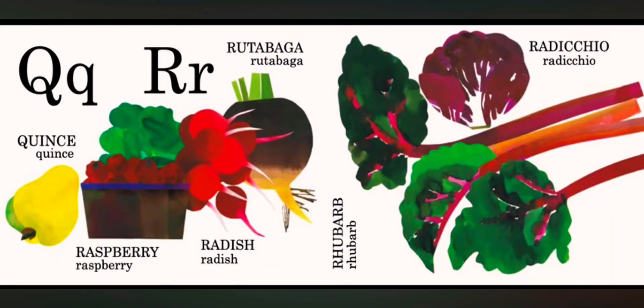Q is for quince. R is for raspberry. R is for radish. R is for rutabaga. R is for rhubarb. R is for radicchio.